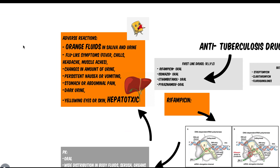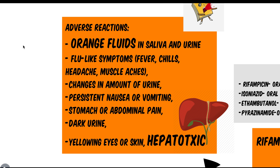The reason we use orange for rifampicin is because the first adverse reaction to remember is that it produces orange-coloured fluids, such as in the saliva and urine. It's also hepatotoxic. It causes other symptoms such as muscle aches, headache, and abdominal pain. The two main ones to remember are orange fluids and hepatotoxicity.